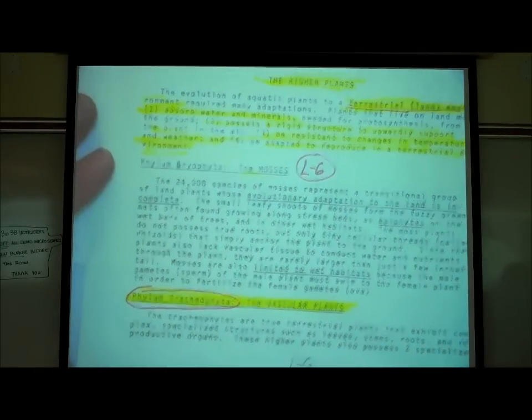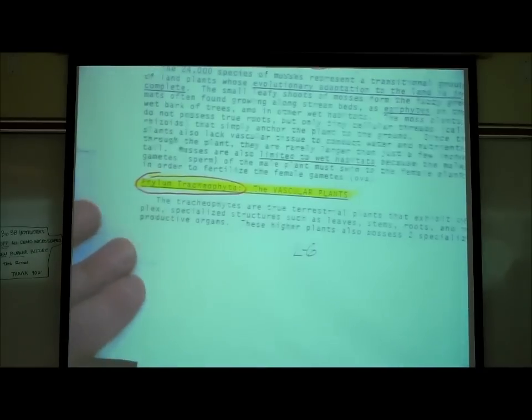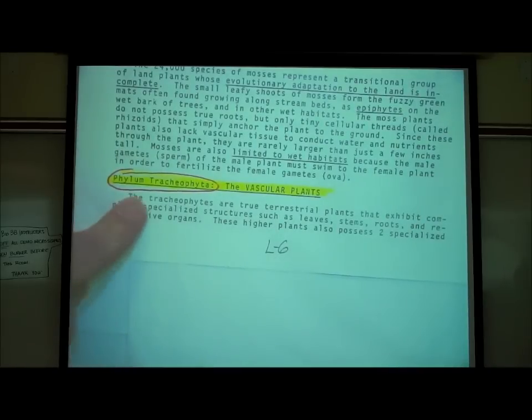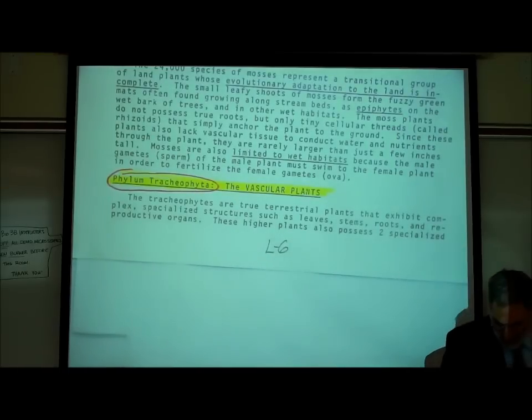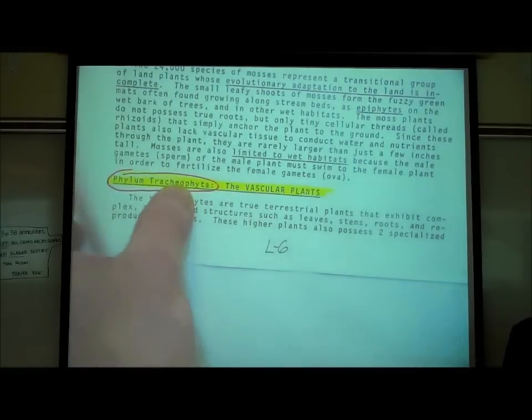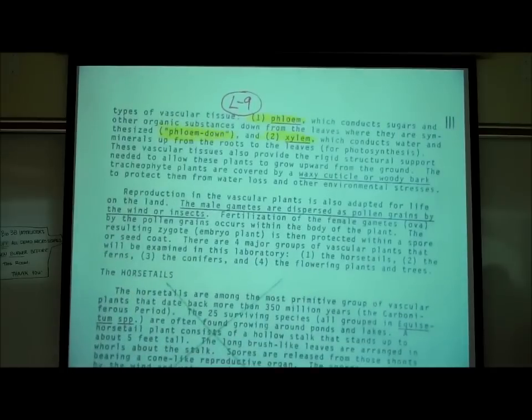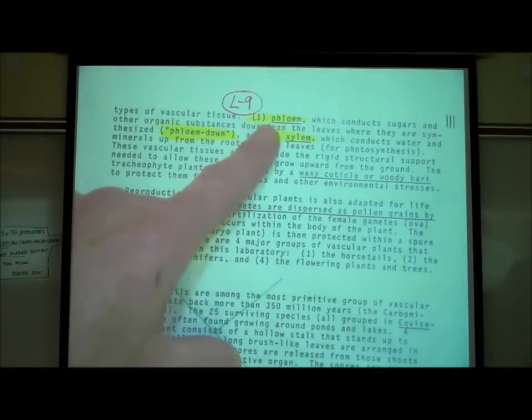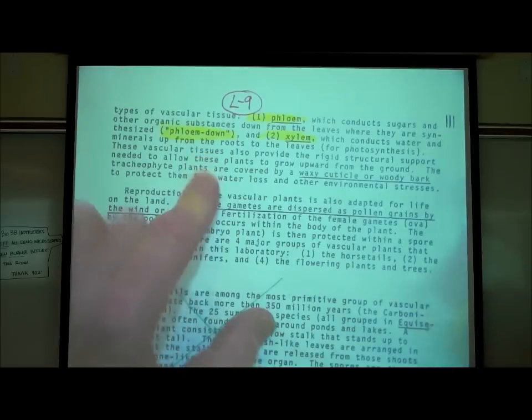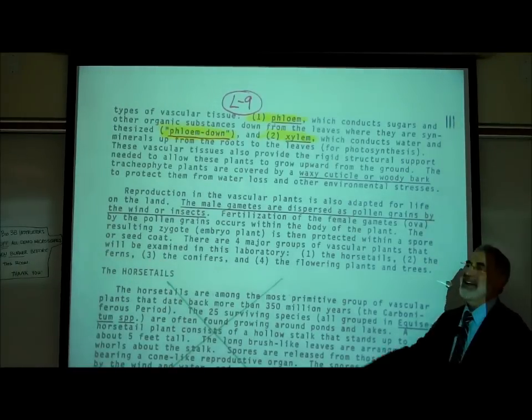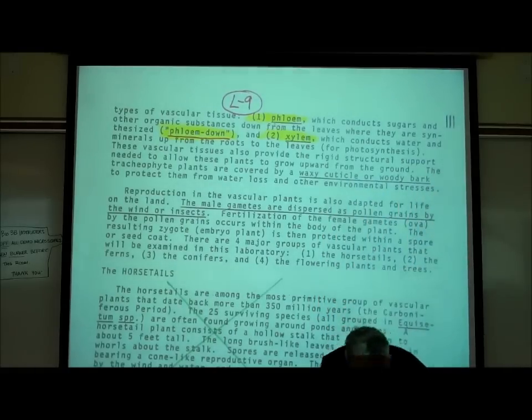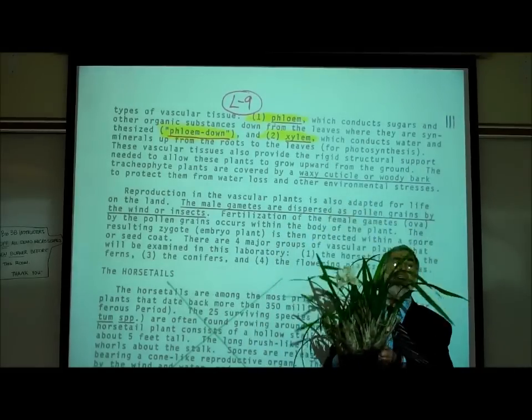The more important phylum, this is where I'll stop for today, is phylum tracheophyta. I do want you to know that name because that's the most important phylum in the plant kingdom. These are the plants that have tubes or vessels, the vascular plants. And they have phloem and xylem. On page L9 at the top, I mentioned the two types of vessels: phloem down or phloem, and xylem or xylem up. The phloem carries sugars from the leaves of the plant down, commonly down to the roots.